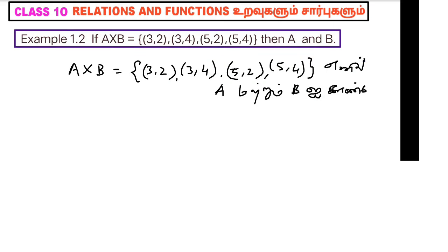Hi students, this is Clauston Maths example 1.2. If A cross B equals {(3,2), (3,4), (5,2), (5,4)}, then find A and B.